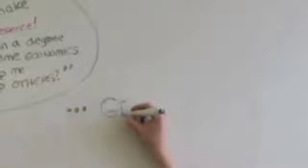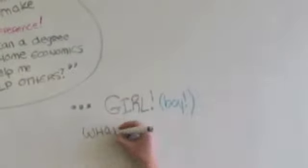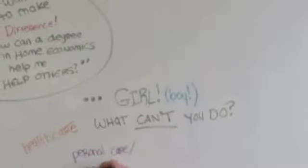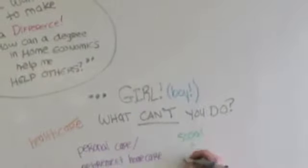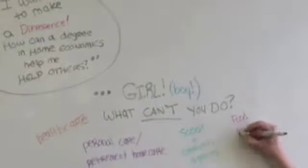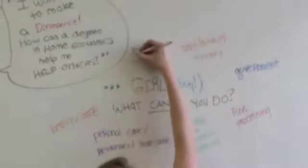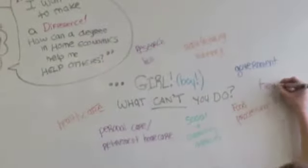So where can you go with a degree in human ecology? Well, you can work in a variety of different environments such as hospitals, nursing and retirement homes, social and community agencies, government manufacturing industries, research labs, universities, colleges, and the list goes on.